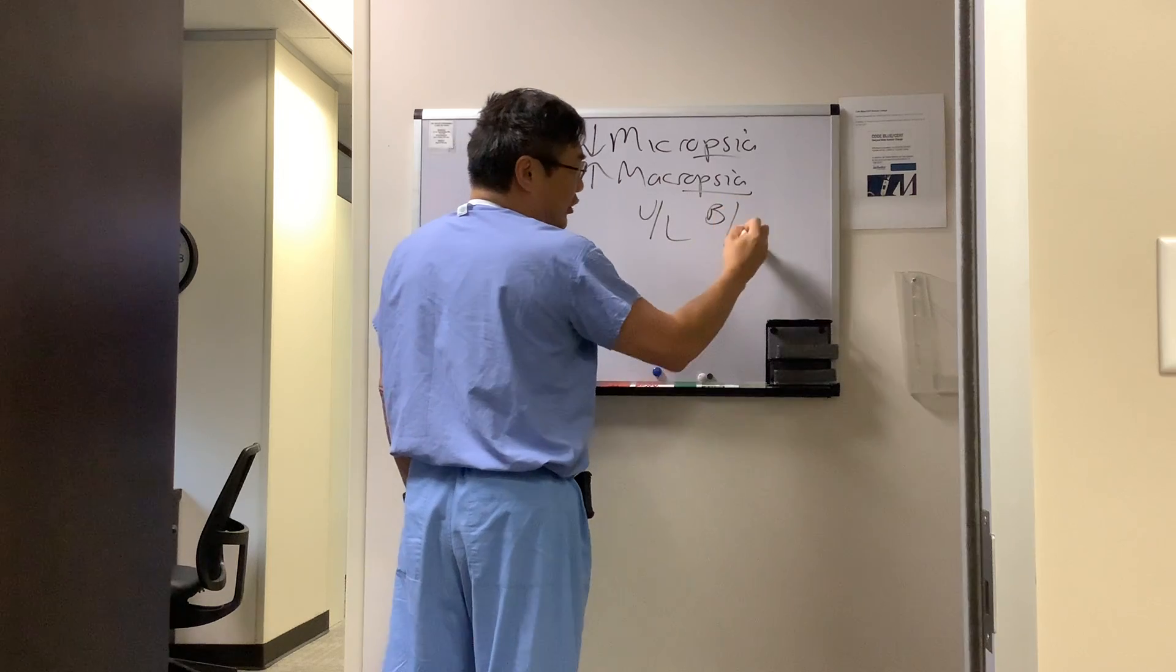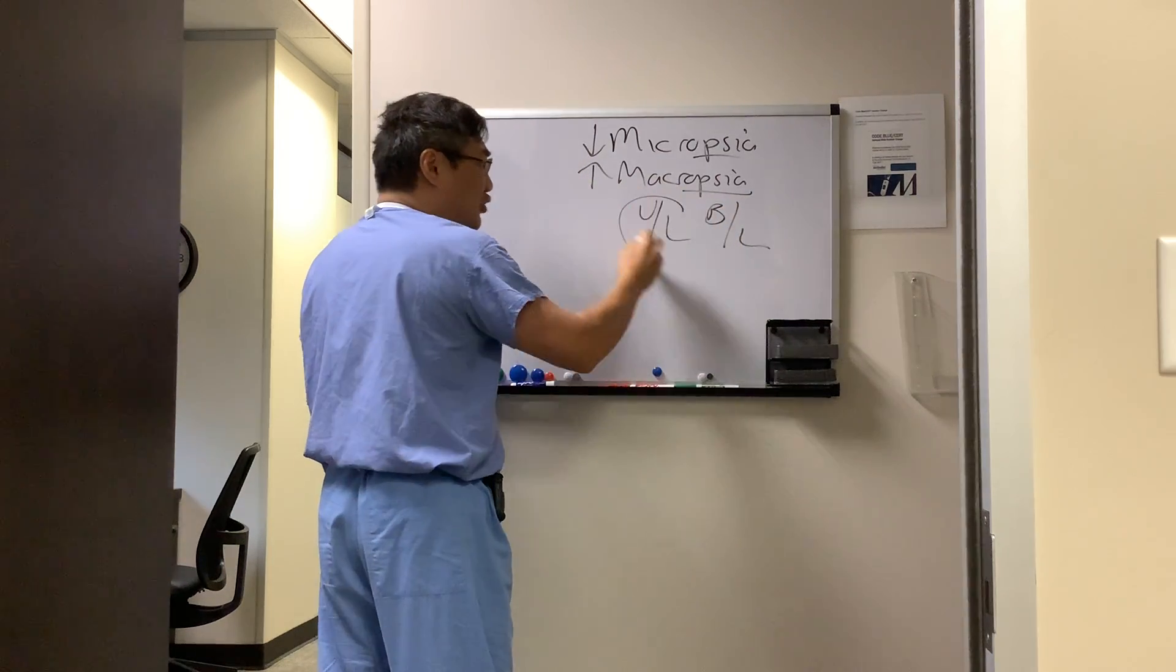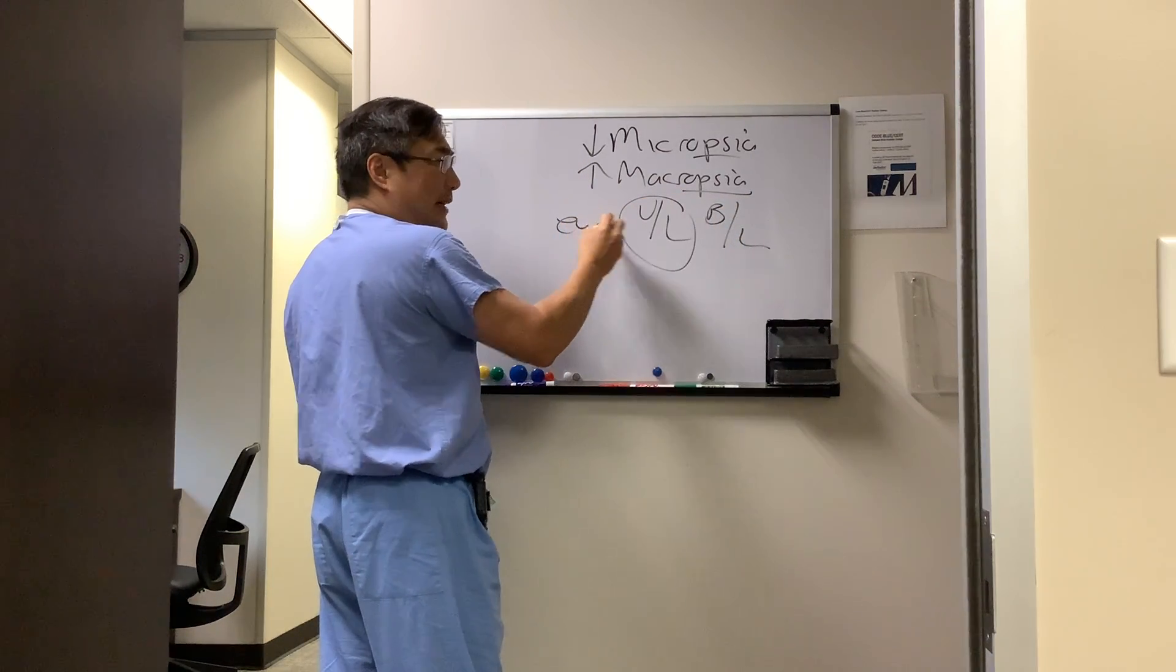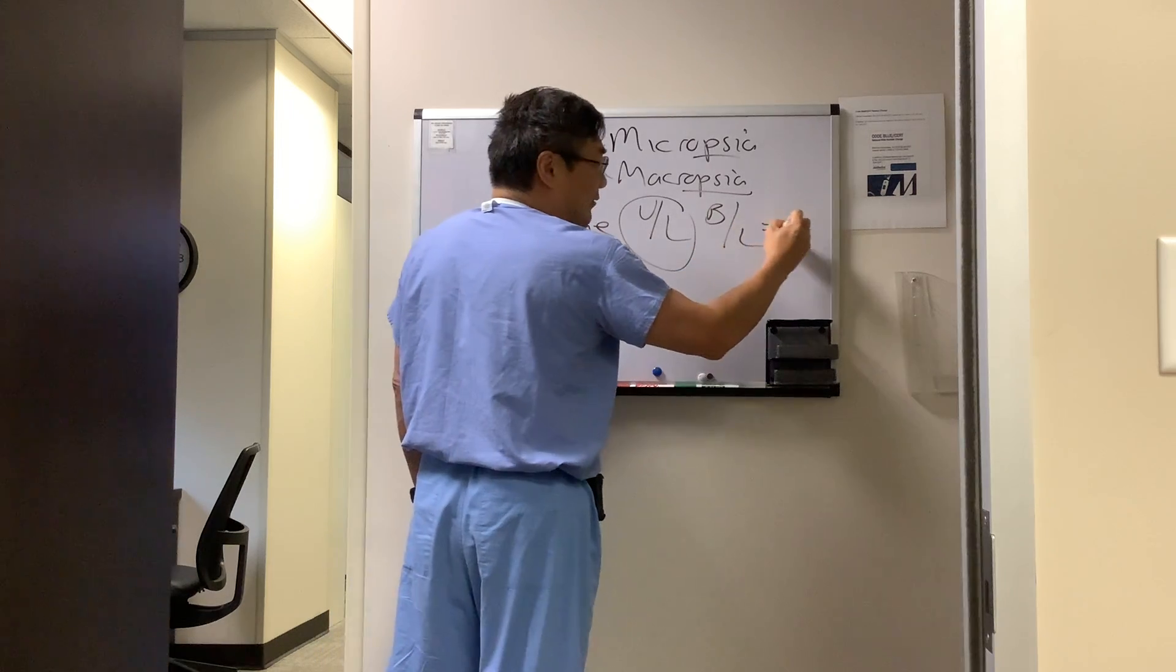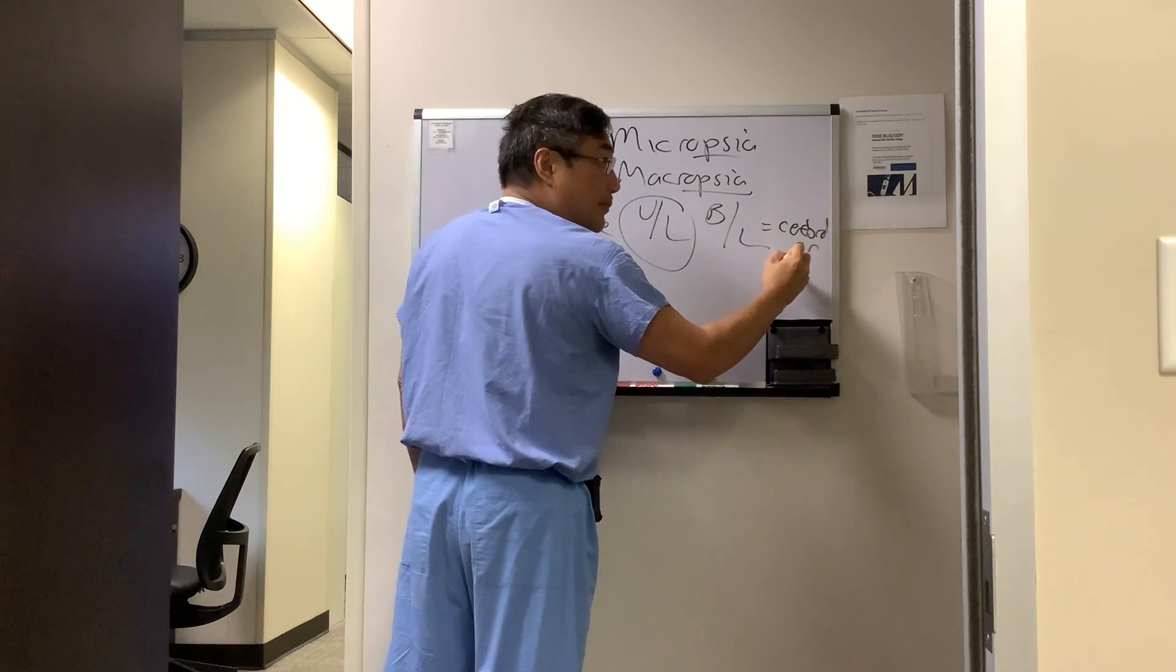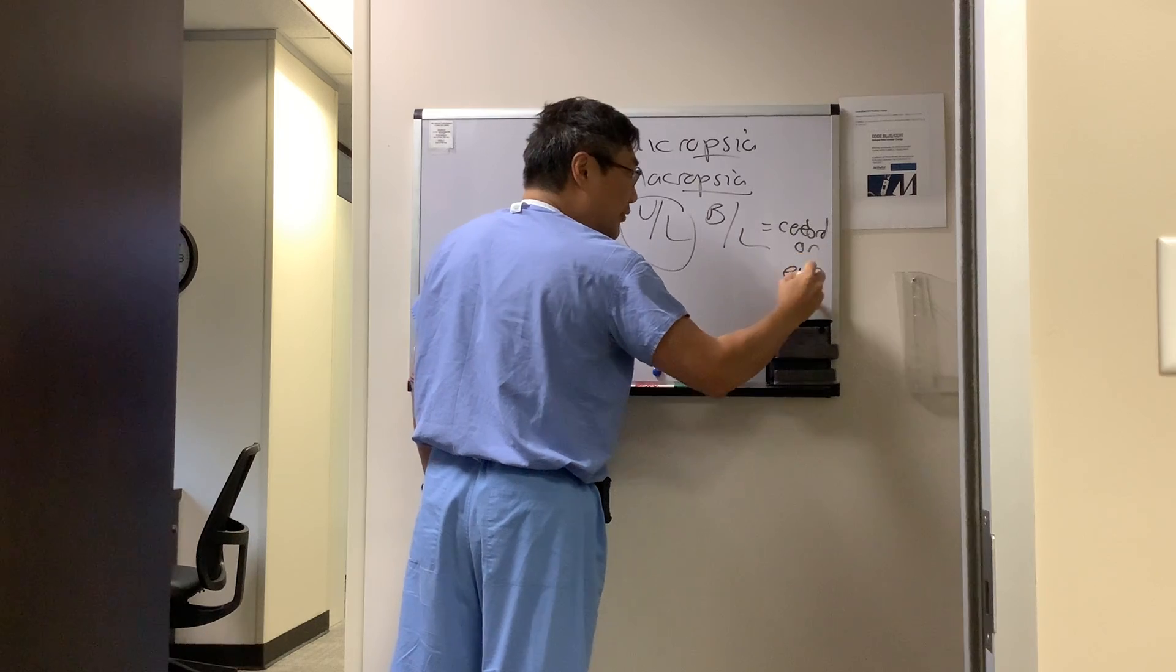The first and most important question is whether it's unilateral or bilateral. If it's unilateral, then of course that's going to be in your eye. If it's bilateral, it could be cerebral or it could be in both eyes.